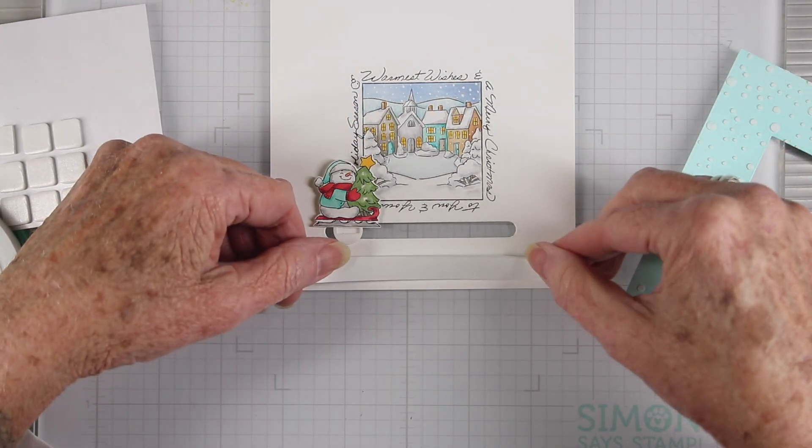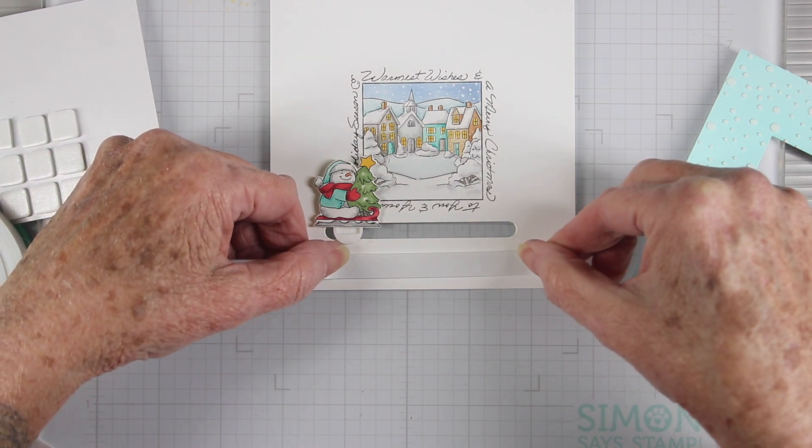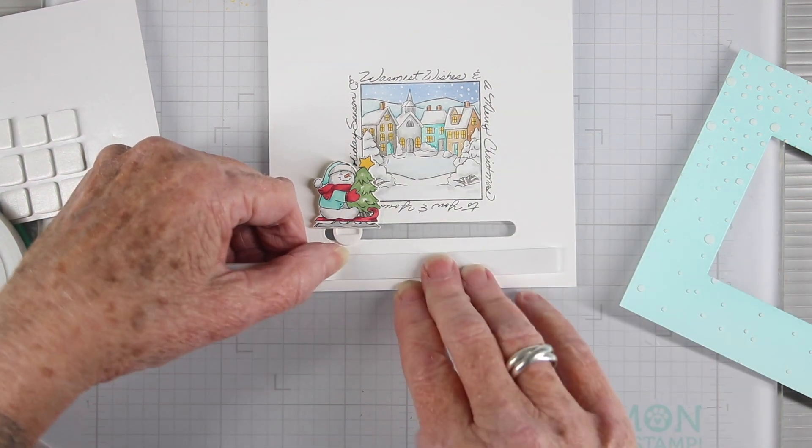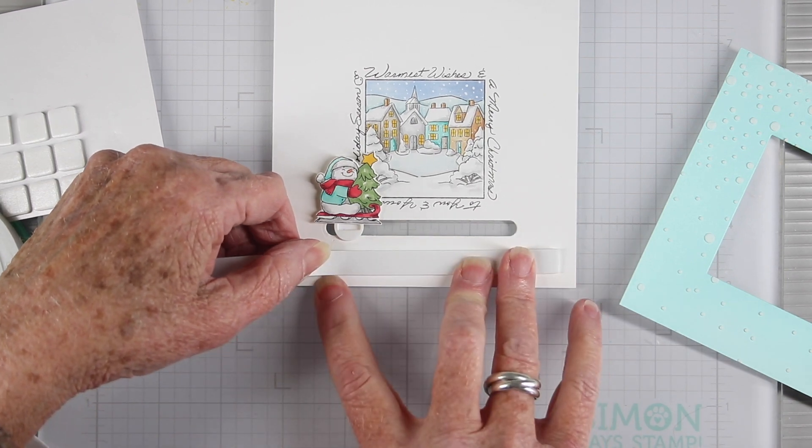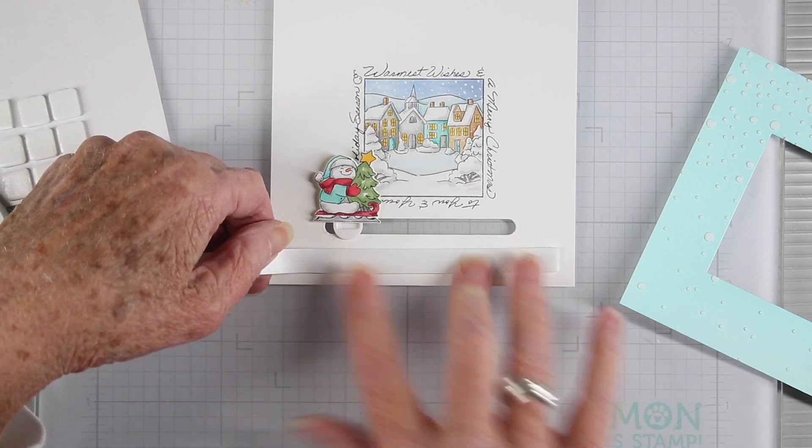Next I'm adding some Simon Says Stamp white foam tape and this is the perfect height so that my snowman doesn't rub against the frame. When putting your foam tape in place, you'll want to make sure that you leave plenty of room below the glider.